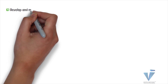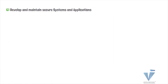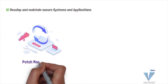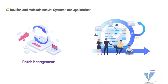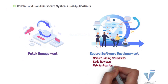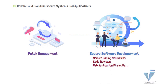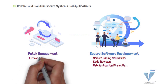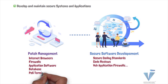PCI DSS Requirement 6, which is to develop and maintain secure systems and applications, requires organizations to focus on two major areas: patch management and secure software development. This provides control on the frequency of patching as well as on developing software securely, which includes using secure coding standards, code reviews, web application firewalls, and so on. The requirement requires organizations to patch all critical components in the card flow pathway, which includes internet browsers, firewalls, application software, databases, POS terminals, and operating systems.